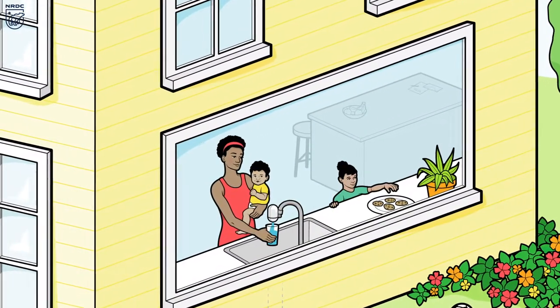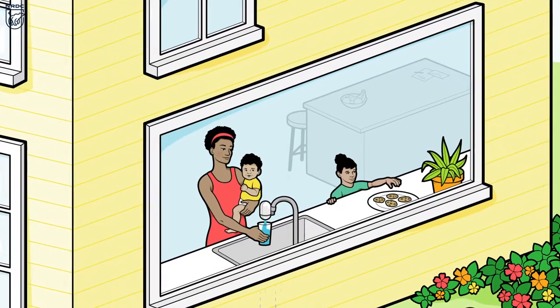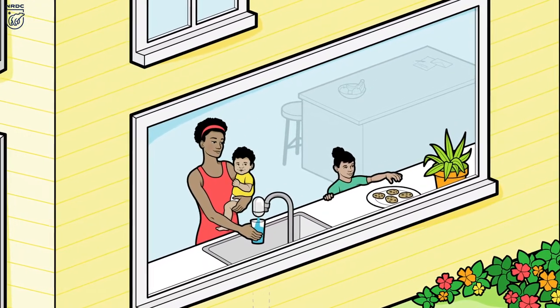Your local water utility may also have records or be able to conduct an in-home inspection to see if you have a lead service line.